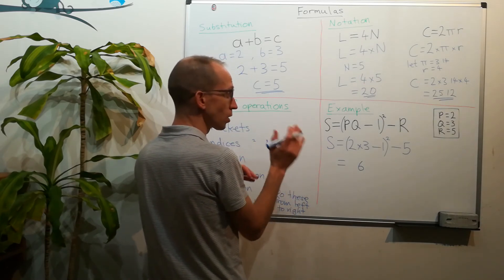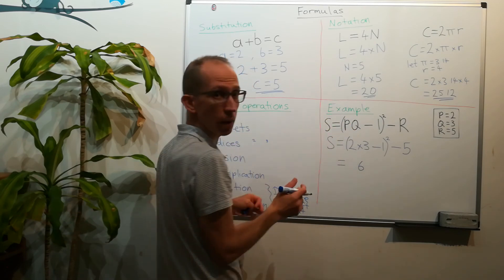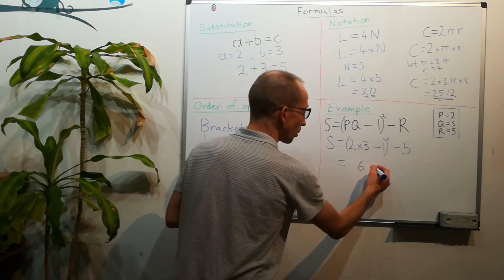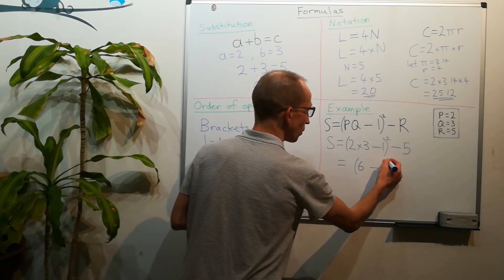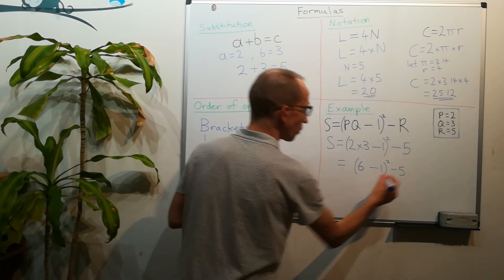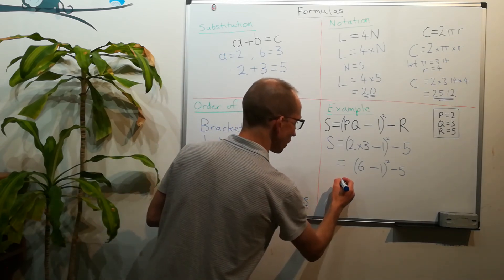With these it's always good to show your workings and to just do one step each time. So we've done the 2 times 3, so we've still got minus 1, we've still got that squared, and we've still got minus 5. Now the next step.